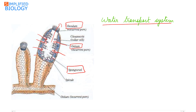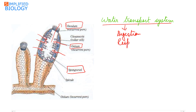Water enters through the pores into the spongocoel and moves out through the oscula. During this process, gathering of food, respiratory exchange, and removal of waste occurs. The water transport system thus helps in digestion and also in reproduction.